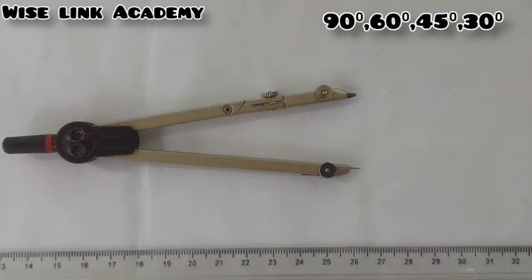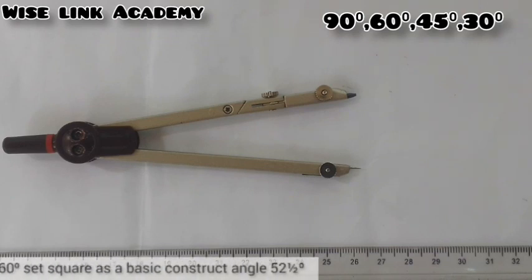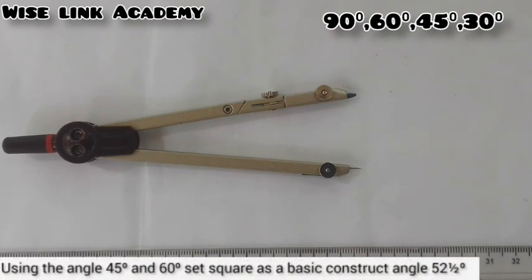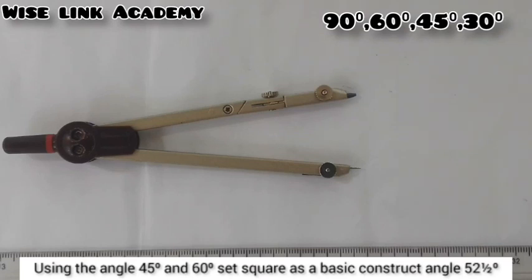These are special angles. Now my question is, as you can see the question in front of you: using the angle of 45 and 60 degree set square as a base, construct angle 52.5. Now my question is, angle 52.5 falls in between which range? I'm having 90, 60, 45, and 30.